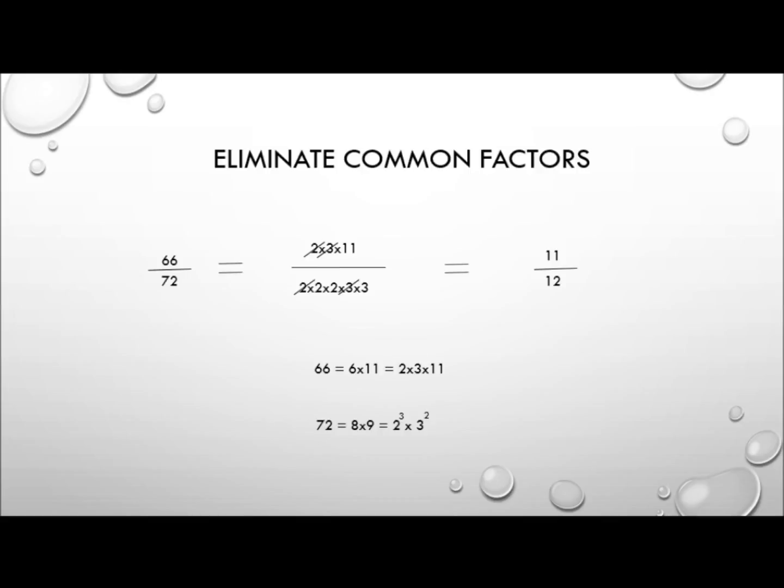So our 66 over 72 is actually 2 times 3 times 11, divided by 2 times 2 times 2 times 3 times 3. Well, they have a 2 in common on the top and the bottom, so we can eliminate the 2 from the top and the bottom. They also have a 3 in common on the top and the bottom, so we can eliminate 3 from the top and the bottom. And that leaves us with 11, divided by 2 times 2 times 3. Well, 2 times 2 is 4, and 4 times 3 is 12. So our 66 over 72 reduces down to 11 over 12.